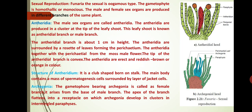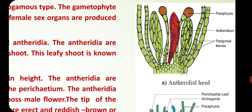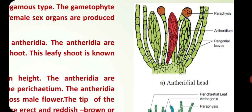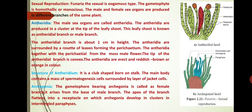The antheridia are surrounded by a rosette of leaves forming a perichesium. The antheridia together with the perichesial leaves form the moss male flower. The tip of the antheridial branch is convex. The antheridia are erect and reddish-brown or orange in colour. A mature antheridium is club-shaped, borne on a stalk. The main body contains a mass of spermatogenous cells surrounded by a layer of jacket cells.